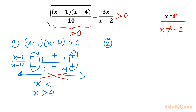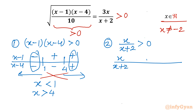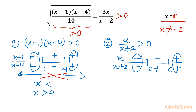Now consider the second condition from the RHS: x over (x plus 2) should be positive. Drawing a number line with critical points minus 2 and 0: once x is greater than 0, x is positive; before that, negative. Once x is greater than minus 2, (x plus 2) is positive; before that, negative. When numerator and denominator have the same sign we get a positive result, so x should be either less than minus 2 or greater than 0.